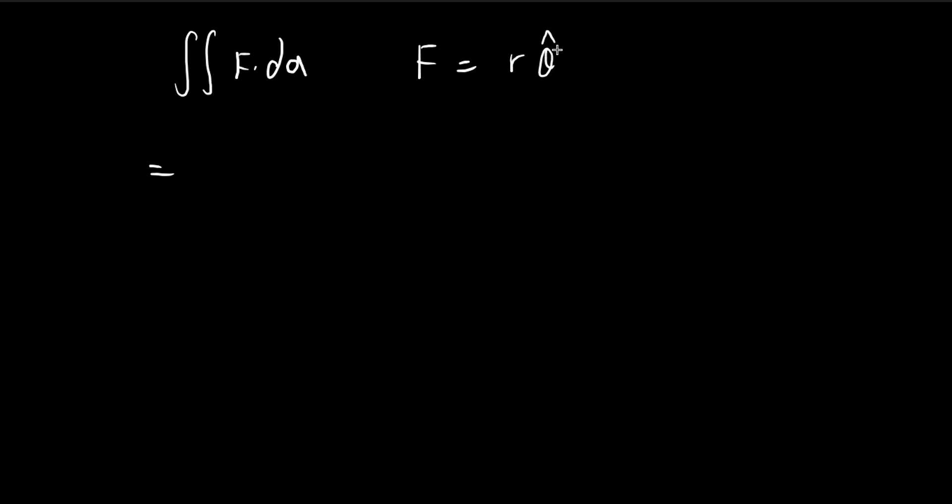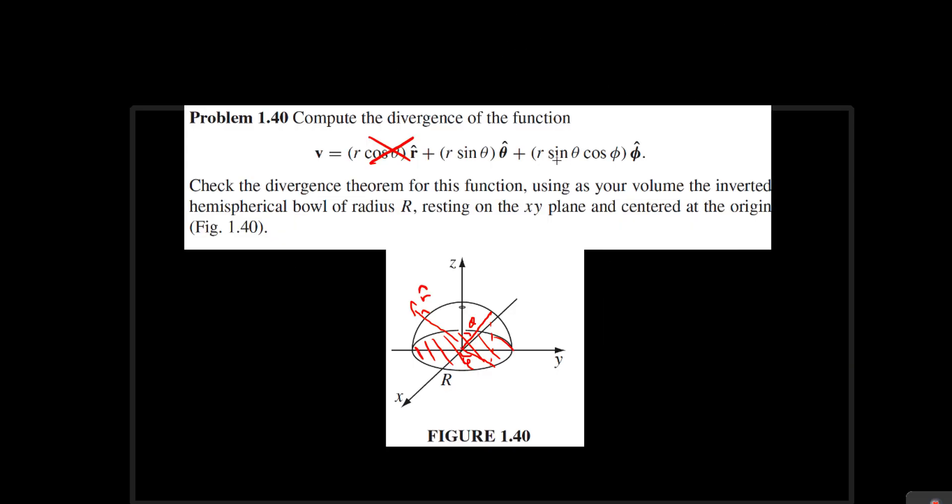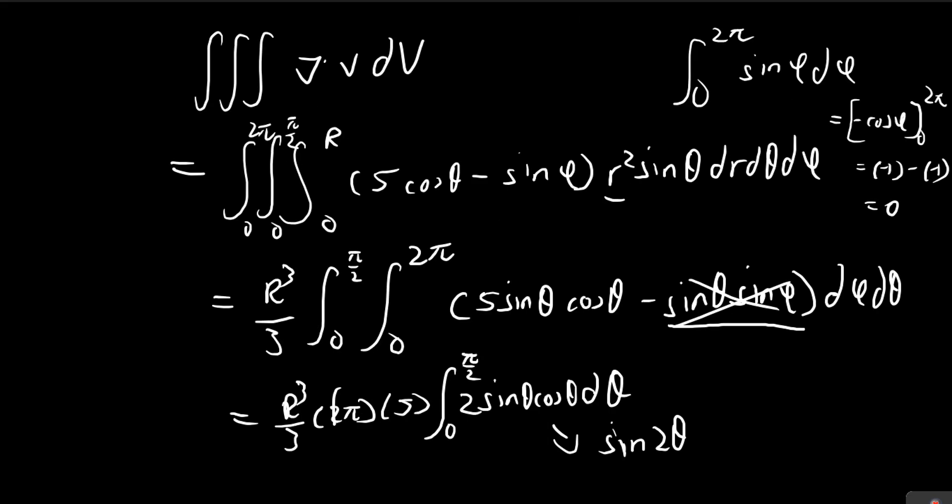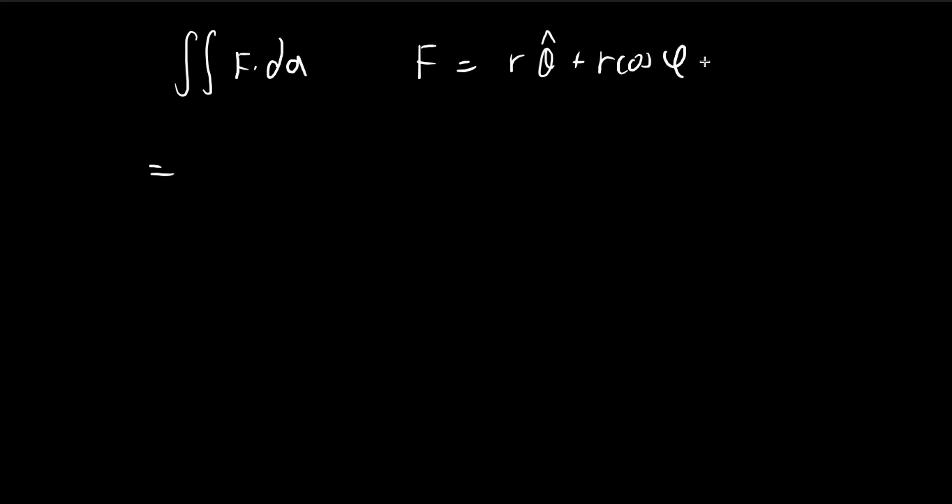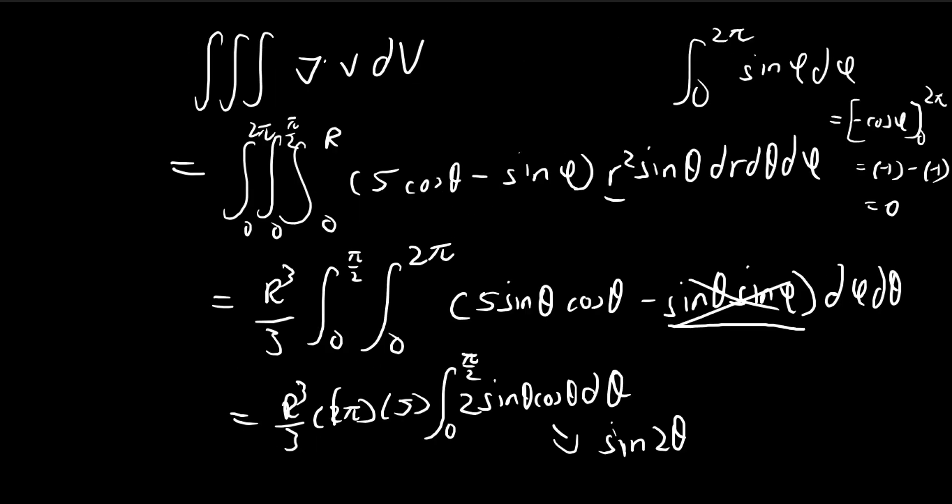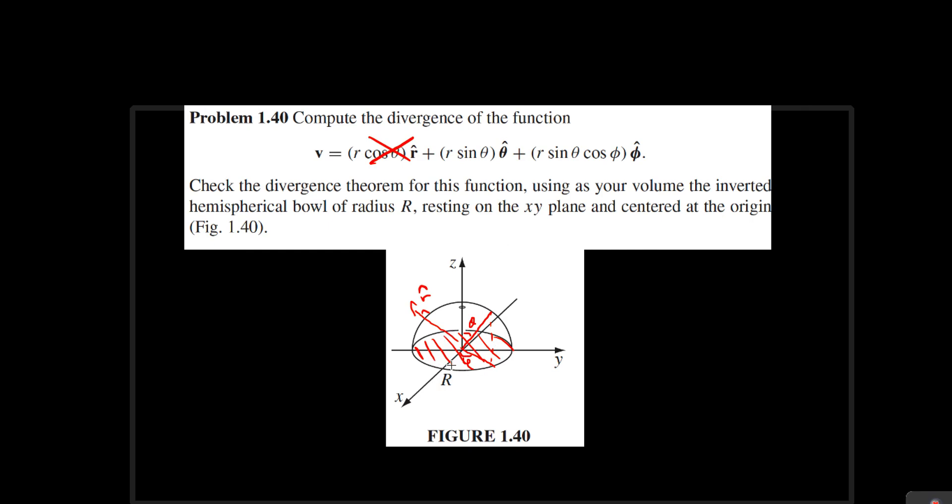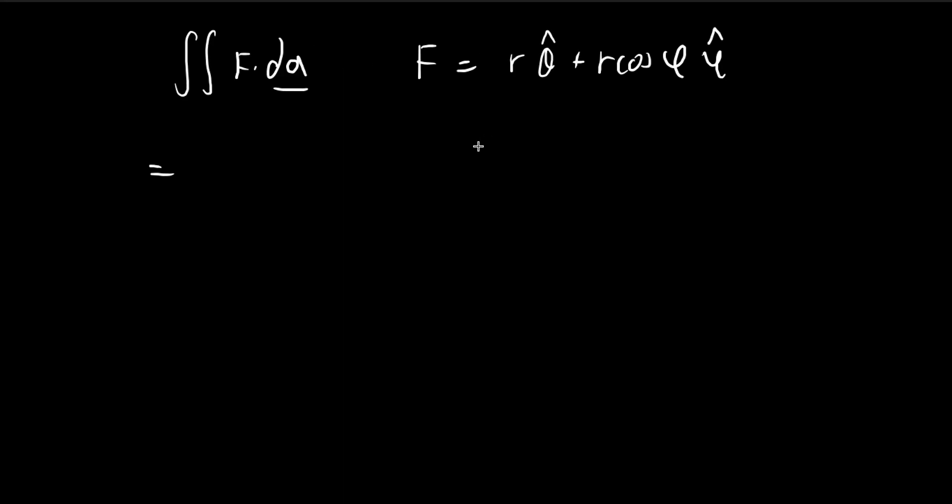So we get r times theta hat. For the other component, this is again equal to 1. So we get r cosine phi times the phi direction. Now for dA, essentially here we have, we're using polar coordinates. So we're integrating around the x, y plane. So we have polar coordinates with r and phi. So r ranges from zero to big R. Phi ranges from zero to 2 pi.